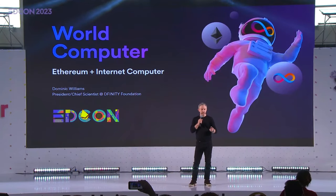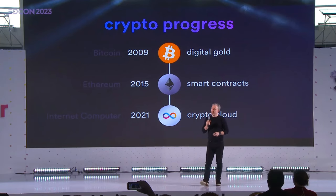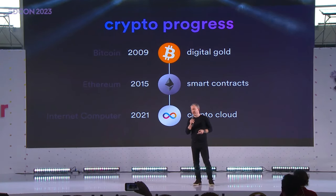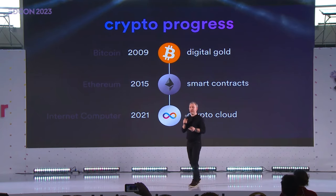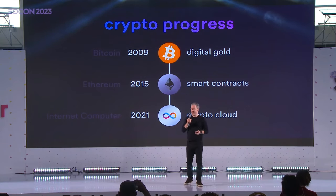Without further ado, let's get started. I'm going to talk about realizing the world computer vision by combining Ethereum with the internet computer. To give you some perspective: Bitcoin appeared in 2009 and gave us digital gold; Ethereum launched in 2015 and gave us smart contracts; and then the internet computer launched in 2021 and produced something you can think of as a crypto cloud. It's a blockchain, but it uses a very different architecture — a lot of super interesting advanced math and cryptography. And you see these kinds of innovations come about every six years or so.